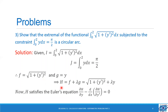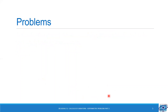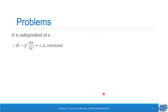So h must satisfy the Euler's equation dh by dy minus d by dx of dh by dy' equal to 0 to be an extremum. Here h is independent of x, therefore we can take the Euler equation h minus y' times dh by dy' equal to c, where c is a constant.